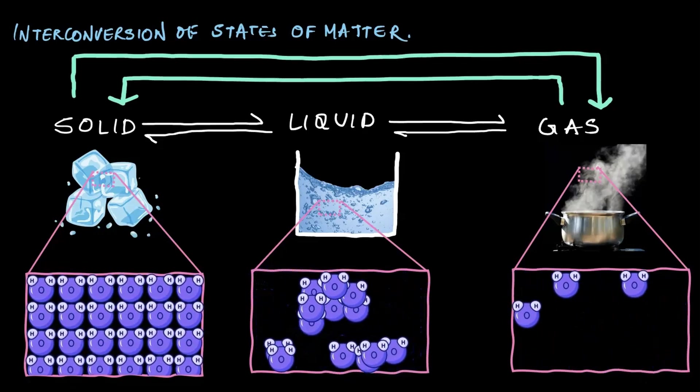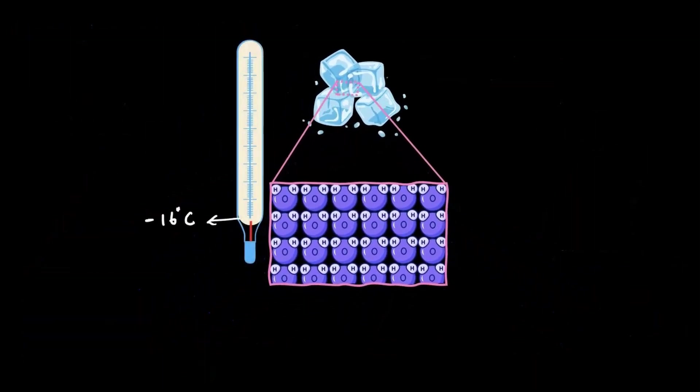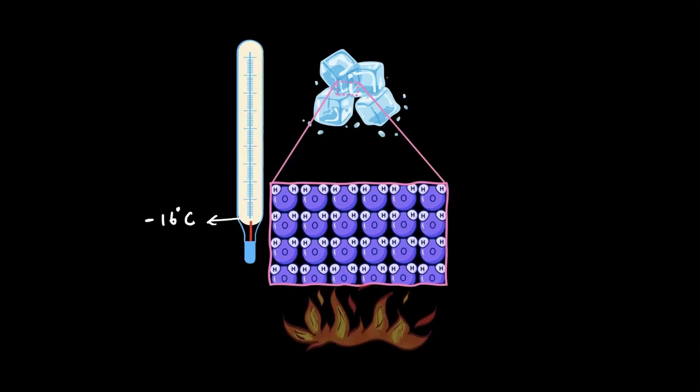All right, let's look at our ice in detail, which is water in its solid state. The ice that I've taken here is at minus 16 degrees Celsius. Now notice how the particles are tightly packed together. Let's see what happens when we add some heat. As we apply heat, the particles, already vibrating a bit, gain more energy and start vibrating even more as the temperature rises.